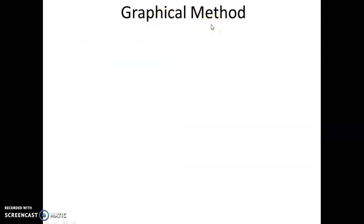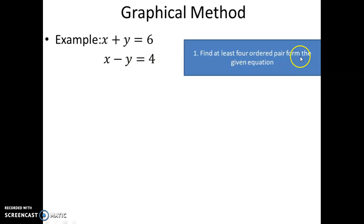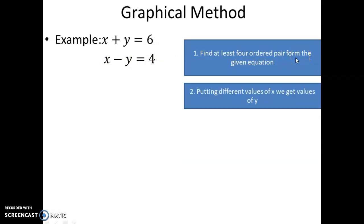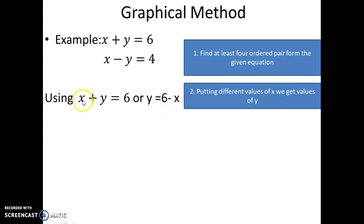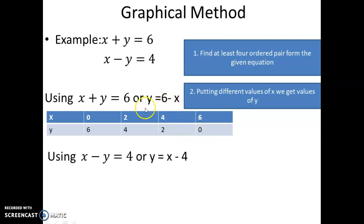The third method is the graphical method to solve simultaneous linear equations. As the name suggests, we draw a graph and solve. For example, we have two equations: x plus y equals 6 and x minus y equals 4. The first step is to find at least 4 ordered pairs for each equation. Using equation 1, y equals 6 minus x: when x equals 0, y equals 6; x equals 2, y equals 4; x equals 4, y equals 2; x equals 6, y equals 0.